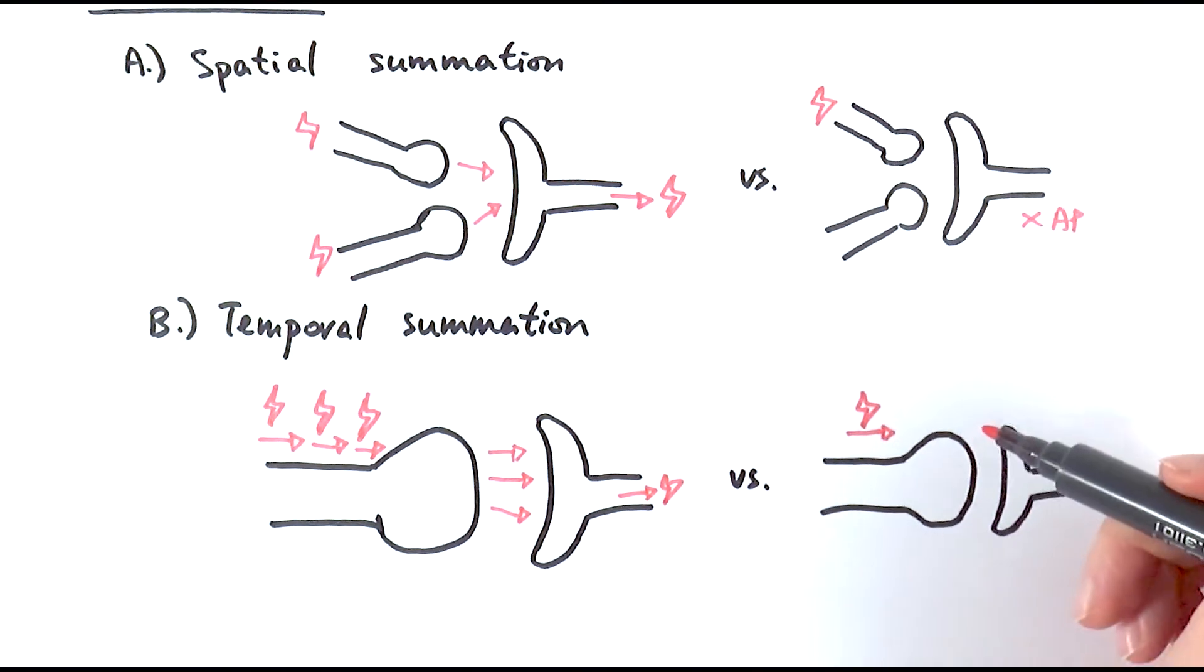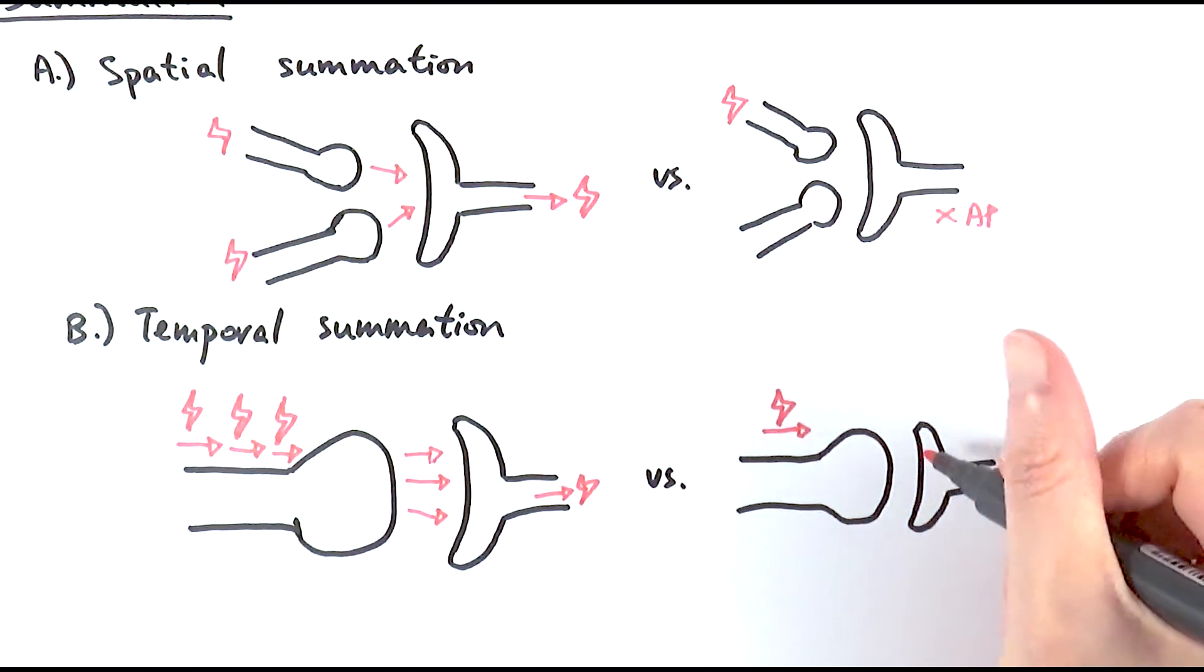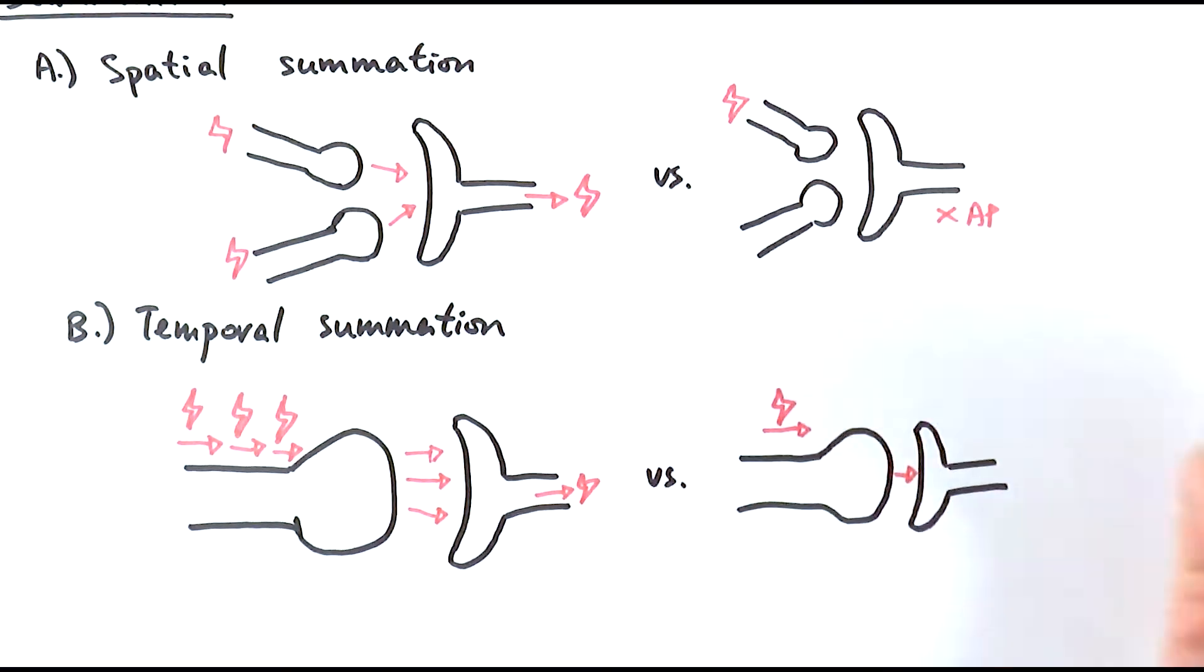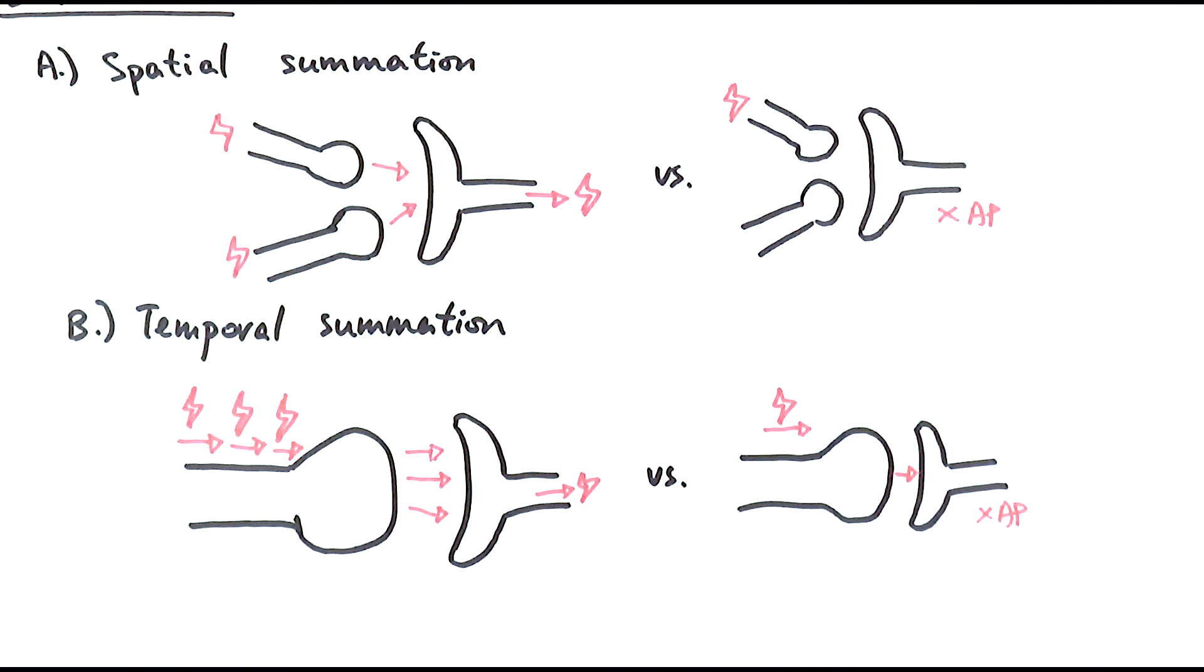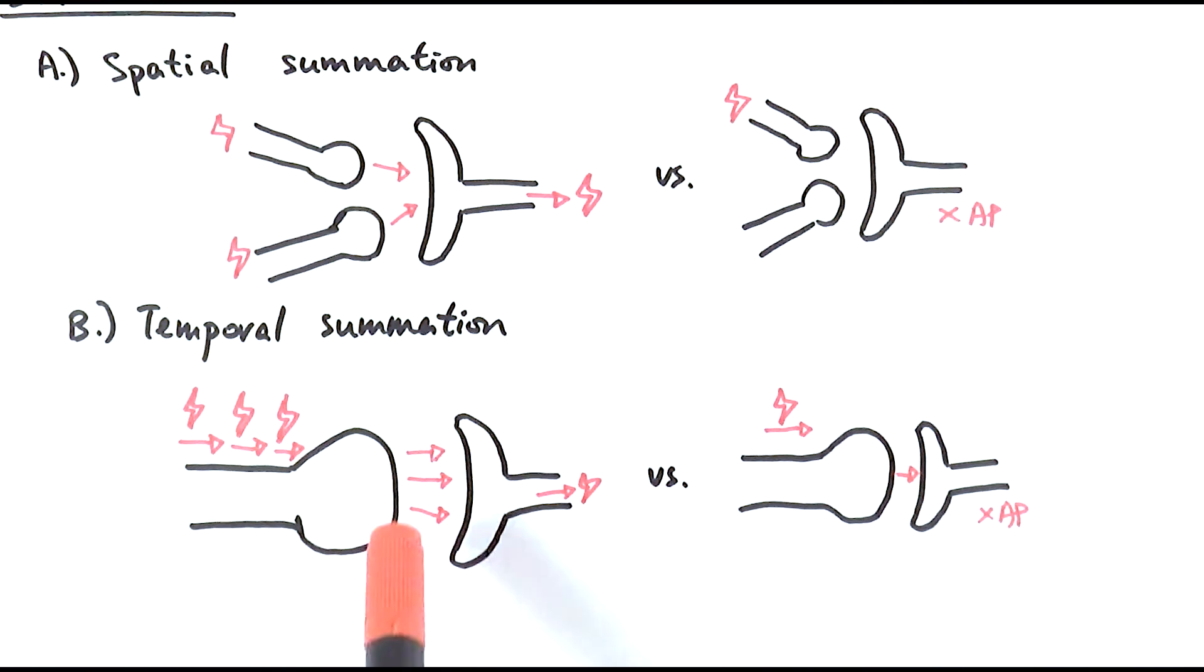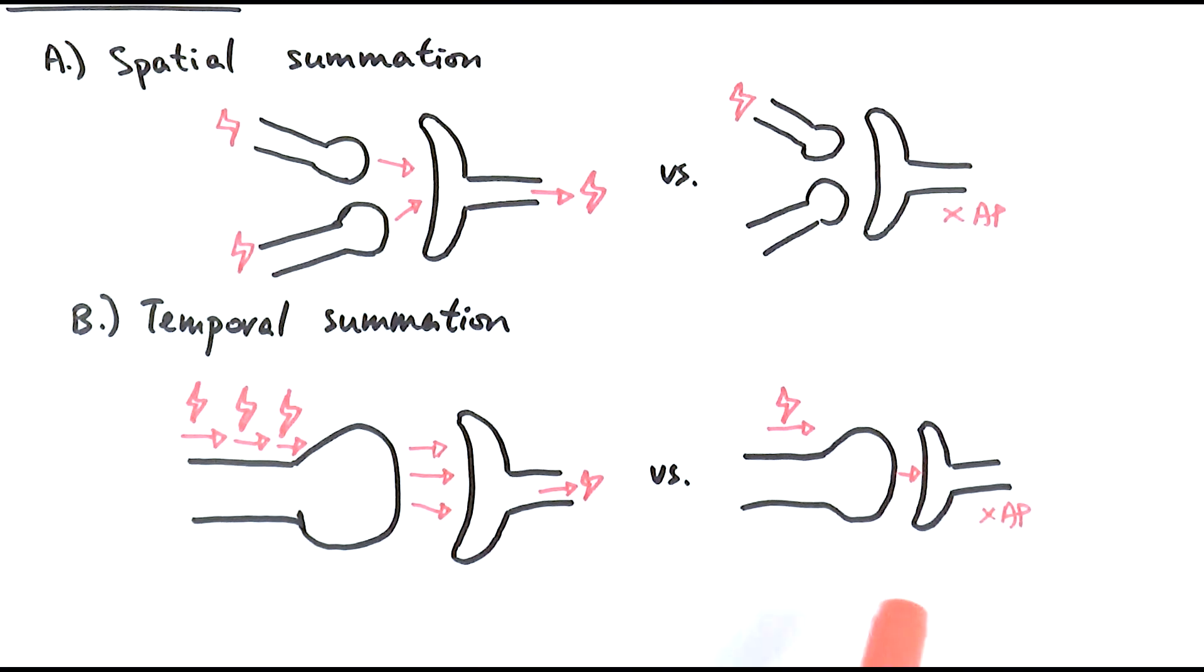Whereas here, when there's only one specific action potential being sent along the presynaptic neuron, only one out of, let's say three here, of neurotransmitters can actually be triggered to be released. Therefore, no action potential would be triggered on the postsynaptic neuron. Here it relies on the concentration of the neurotransmitters being released for that action potential to be triggered in the postsynaptic neuron.